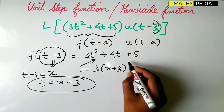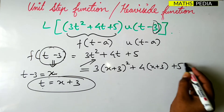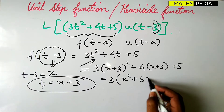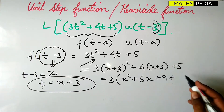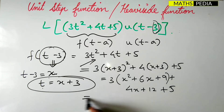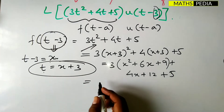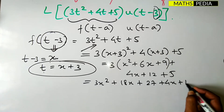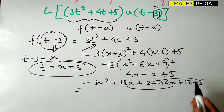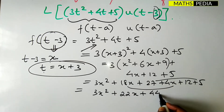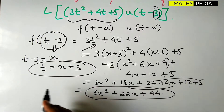Substituting t = x + 3: we get 3(x+3)² + 4(x+3) + 5. Expanding: 3(x² + 6x + 9) + 4x + 12 + 5, which gives 3x² + 18x + 27 + 4x + 12 + 5. Collecting like terms: f(x) = 3x² + 22x + 44.